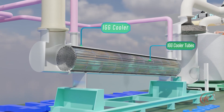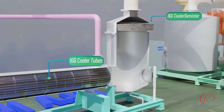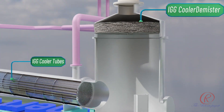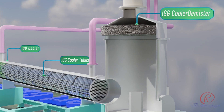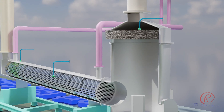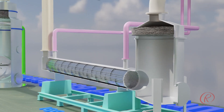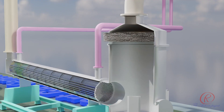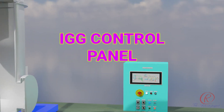IGG cooler tube: to exchange heat from the inert gas to the chilled water. IGG cooler: to remove internal liquid droplets or mist from the cooled inert gas.